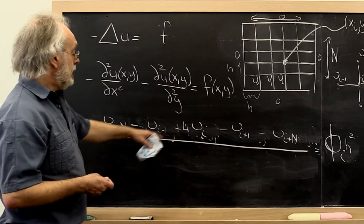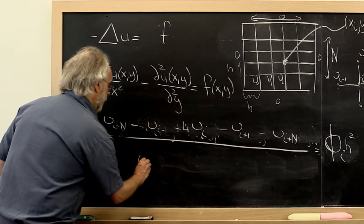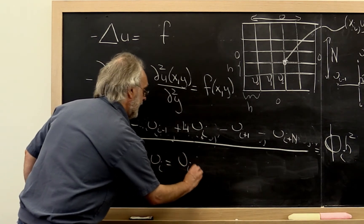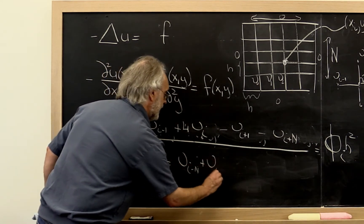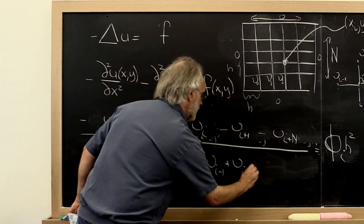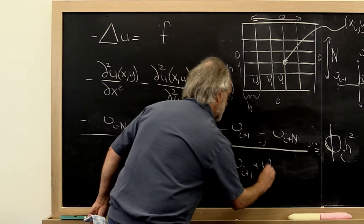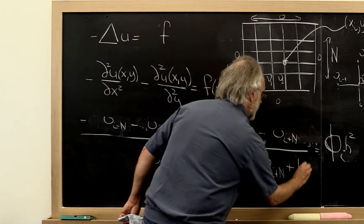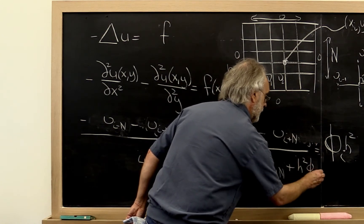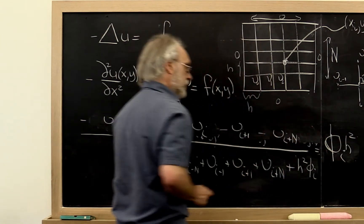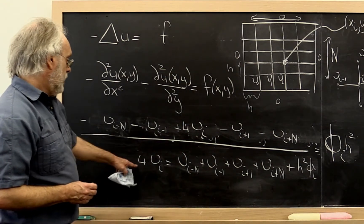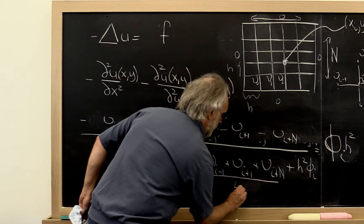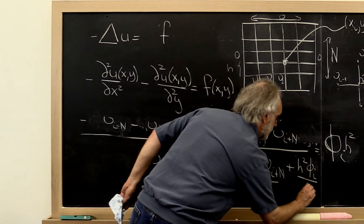So next we can actually say, oh, we can rewrite this as 4 times epsilon i is equal to epsilon i minus n plus epsilon i minus 1 plus epsilon i plus 1 plus epsilon i plus n plus this load vector. We'll write it as h squared times phi of i. And it's better to have the h squared on the other side. And then we can bring the 4 to the other side and say, hmm, that is just this right here.